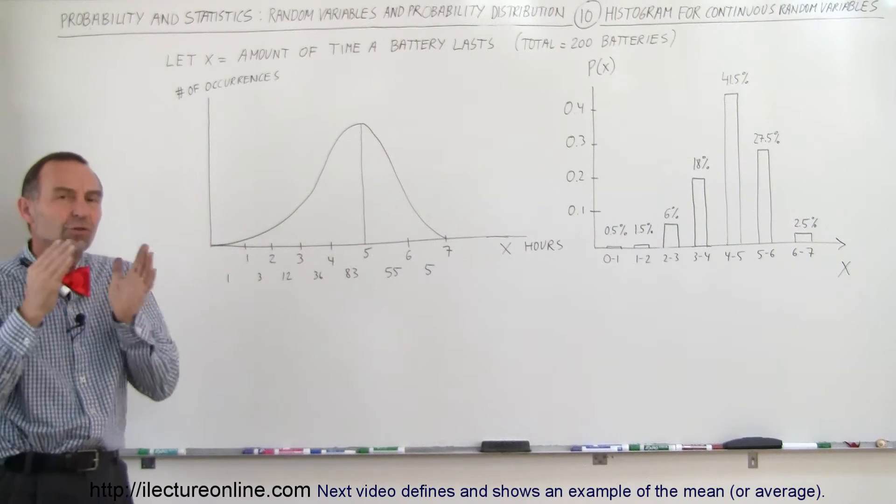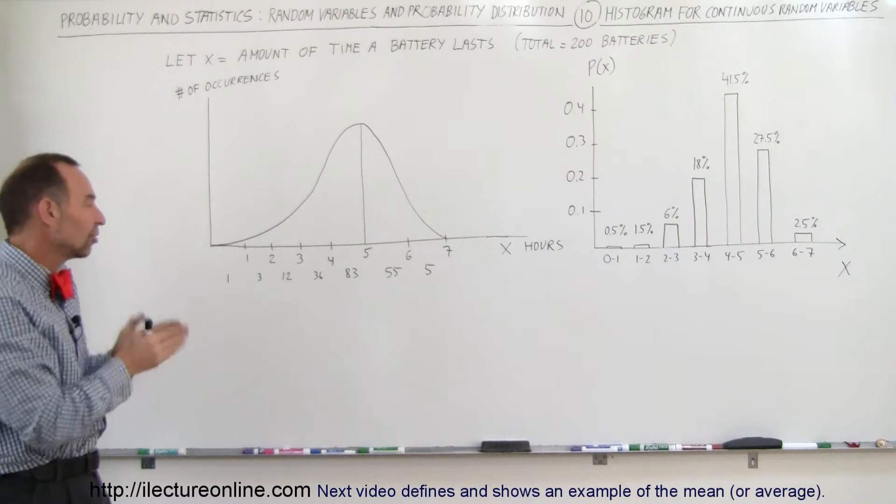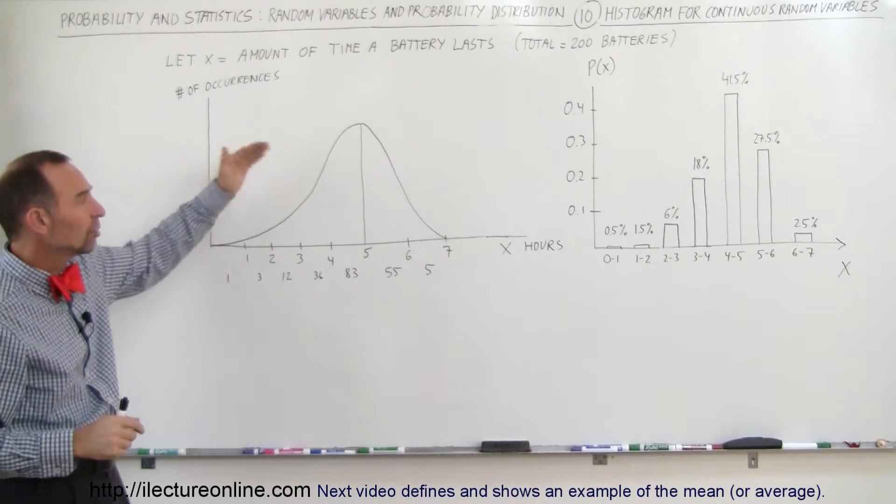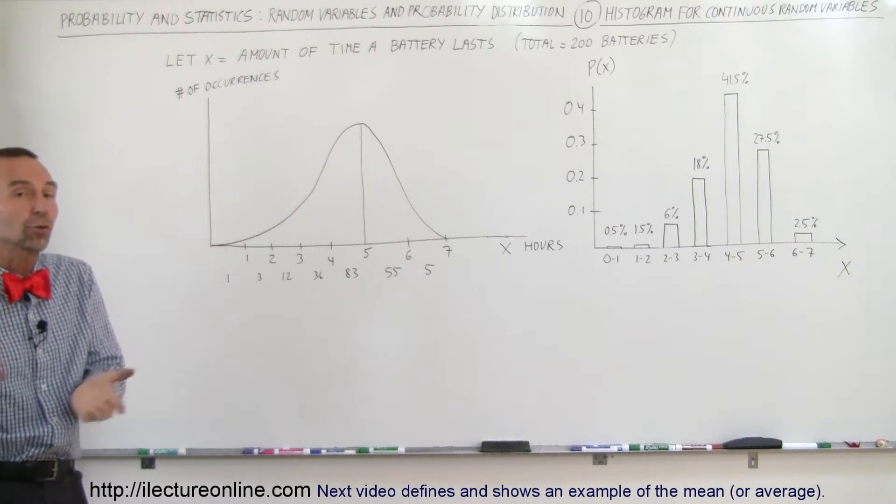But there's not a discrete number here. We cannot say there's so many that last exactly one hour or exactly two hours. It's a continuous distribution, so we can handle it in two ways.